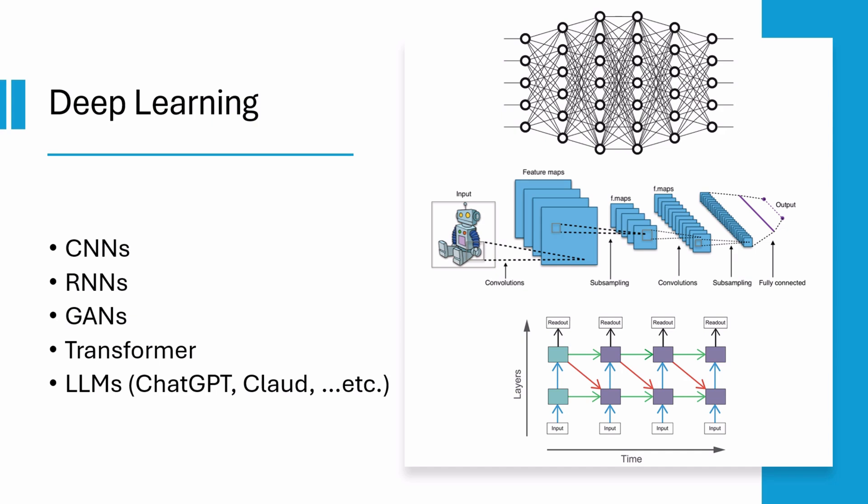For example, when training a deep learning model to recognize fruits, the algorithm does not need detailed instructions about color or shape. Instead, it processes raw images. The initial layers detect basic features like edges, while the deeper layers combine these elements to develop a more comprehensive understanding of what characterizes an apple, banana, or orange.